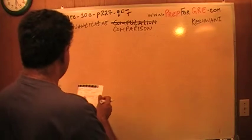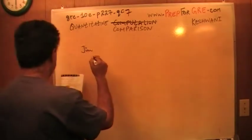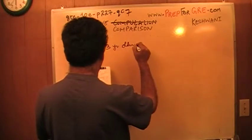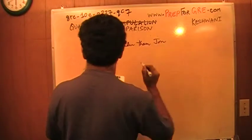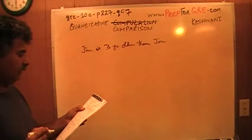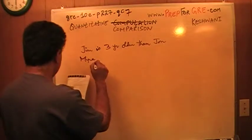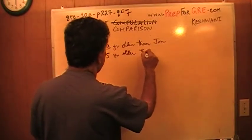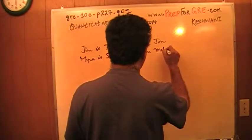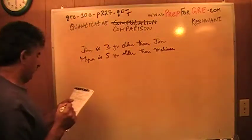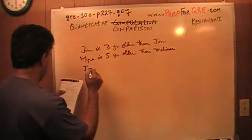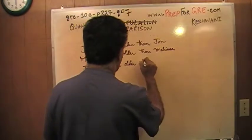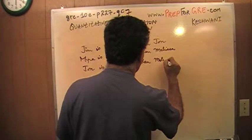It says, Jim is three years older than Jonathan. Myra is five years older than Melissa. Finally, they tell you that Jonathan is two years older than Melissa.